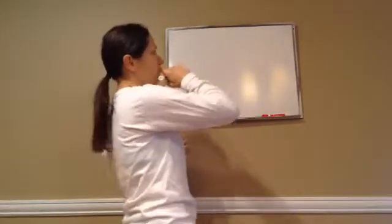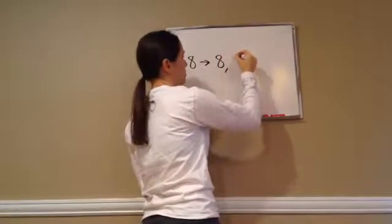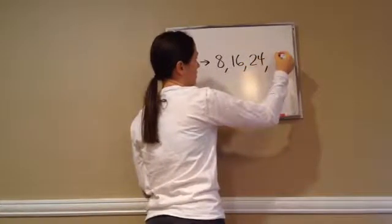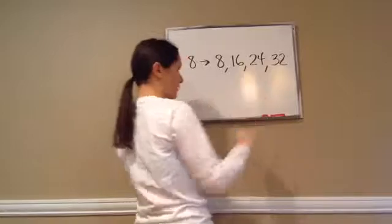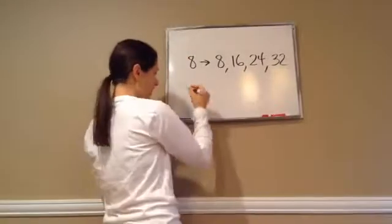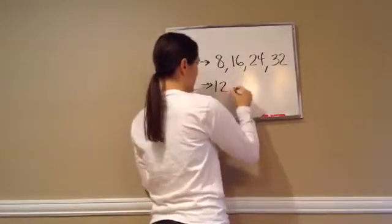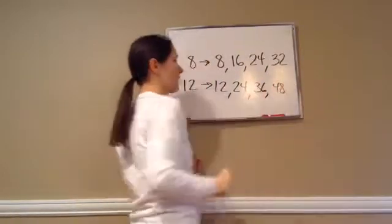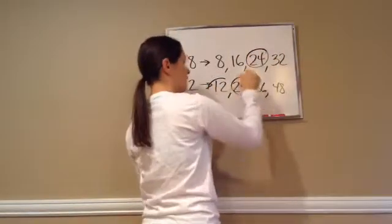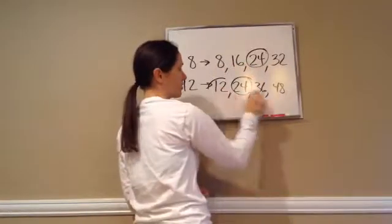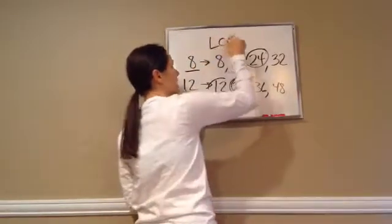For example, tell me the multiples of 8: 8 times 1, 8 times 2, 8 times 3, 8 times 4. So these are just some multiples of 8. Now if I were going to find the multiples of 8 and 12, let's do the multiples of 12: 12, 24, 36, 48. What is the Least Common Multiple? 24. So there's not a 12 in here even though there's a 12 here, and then there's a 24 and a 24. So the Least Common Multiple of 8 and 12, LCM, equals 24.